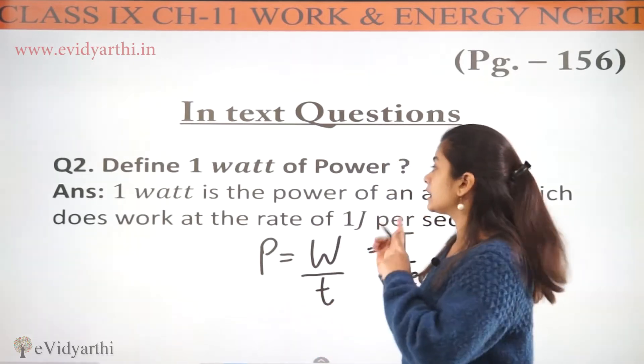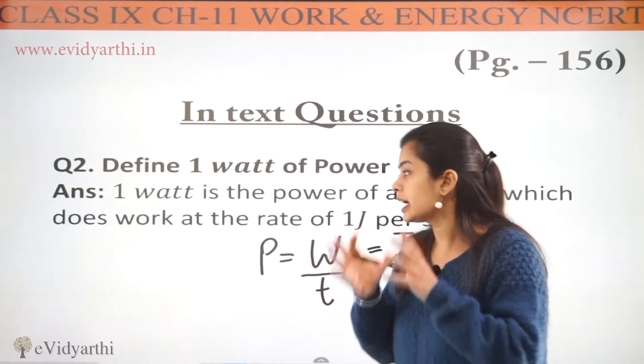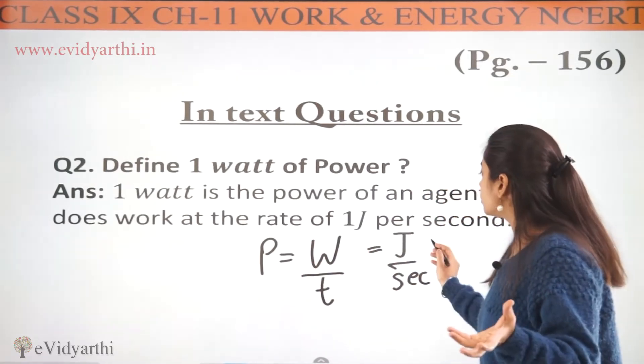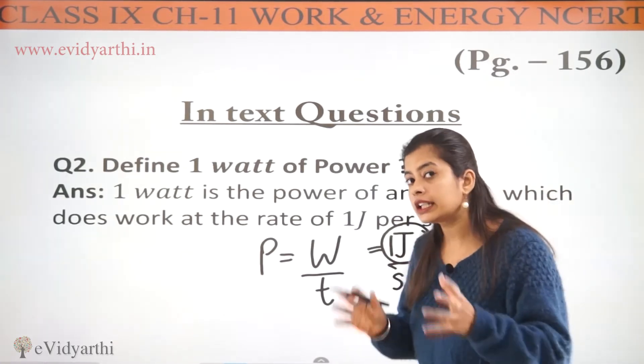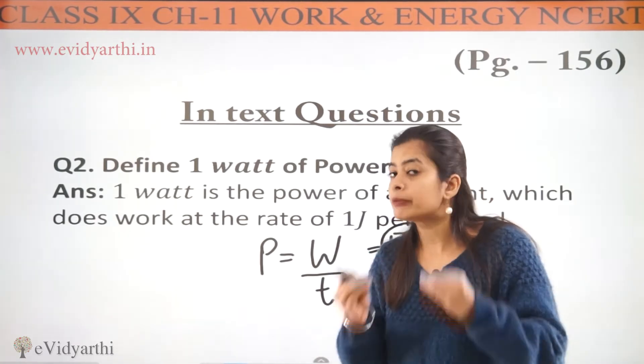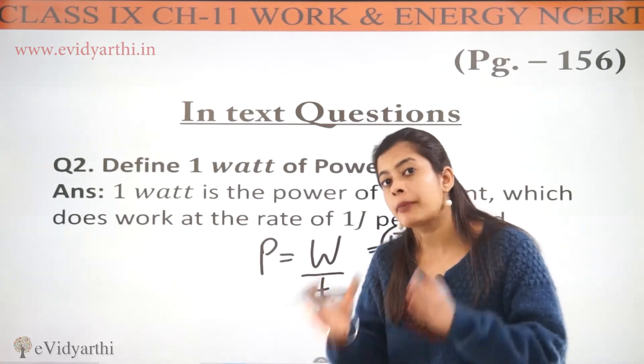Koi bhi object, ya in case agent, if it is working 1 joule, thik hai? Agar usne jitna bhi work kiya hai, woh kitne ke equal hai? If the work is equals to 1 joule and the work done is in 1 second, agar is work ko humne 1 second me calculate kiya hai, so we can simply say that the work done is equals to 1 watt power.